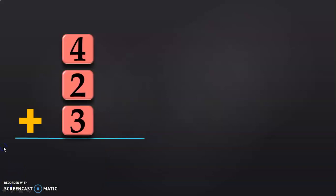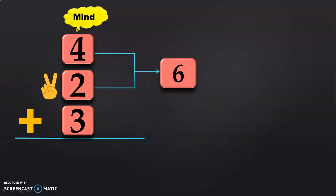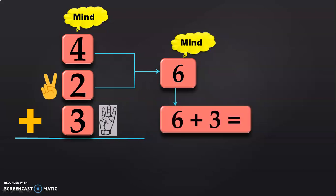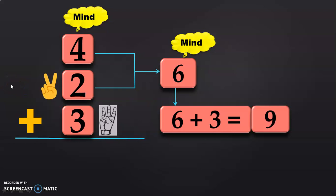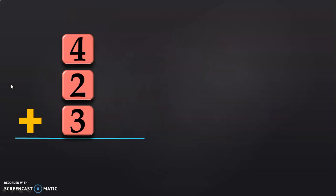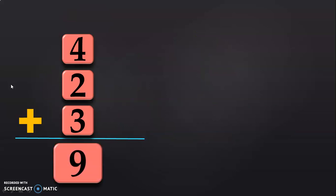Here we have 4 plus 2 plus 3. First, keep 4 in the mind and 2 in the fingers. After 4, count 5, 6. So, 4 plus 2 will give you 6. Now, we have to add 6 plus 3. Have 6 in the mind and 3 in the fingers. After 6, count 7, 8, 9. So, 6 plus 3 will give you the answer 9. The sum of the three numbers 4 plus 2 plus 3 will give you the answer 9.